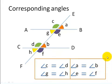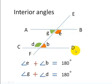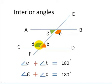This slide shows that angle A is equal to angle B, and angle E is equal to angle F. Now we go to the third category: interior angles. Angle E and angle B are on the same side and on the inside of the two parallel lines, so they are called interior angles. The sum of the interior angles is equal to 180 degrees. Likewise, angle G and angle D are interior angles, and angle G plus angle D equals 180 degrees.